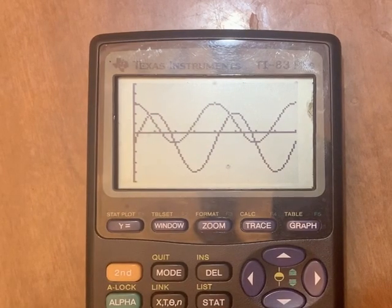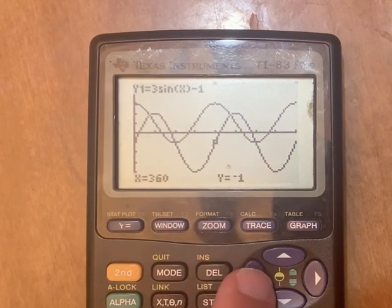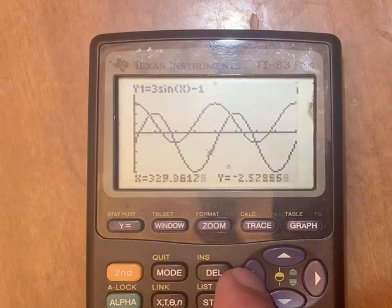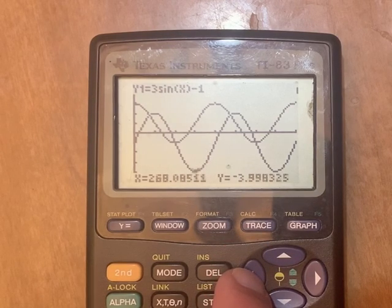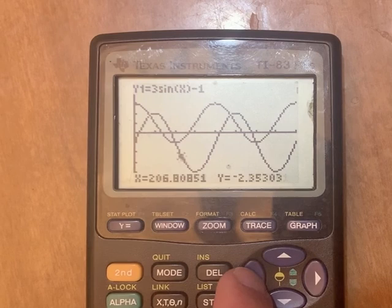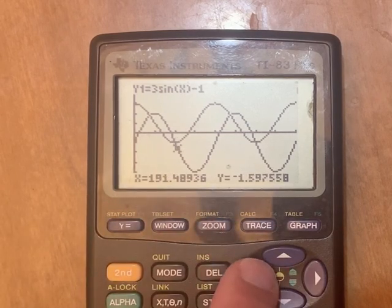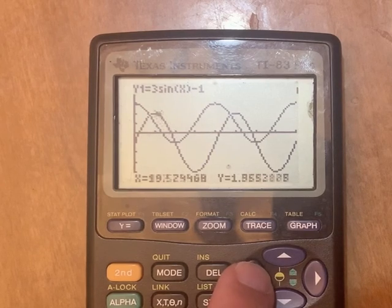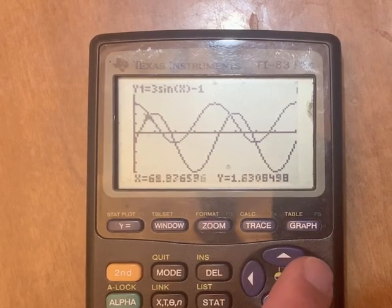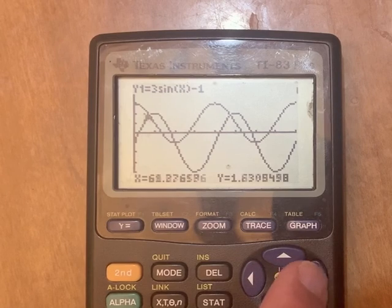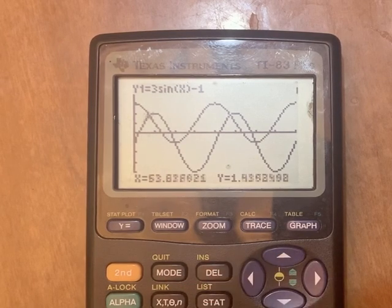To find those intersections, if you just need a really rough estimate, you can hit trace. And you can use your arrow keys and get pretty close to it. And you care about the x-axis, the x numbers. So this looks like it might be 180. And if I go back a little bit, this looks like it's close to 60-ish, maybe exactly 60.